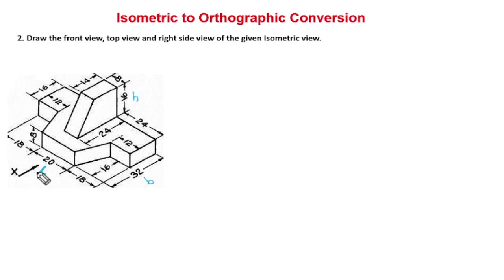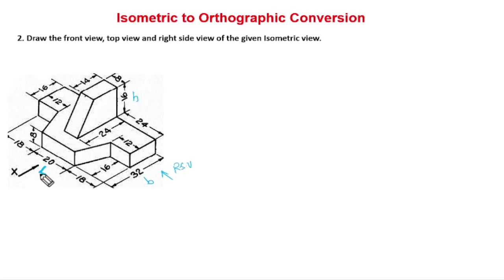First I observe the arrow mark on the figure. The arrow mark always indicates the front view. Depending upon the direction of the arrow mark, we will have either a left side view or a right side view. Here, based on the arrow mark position, we will see the right side view.